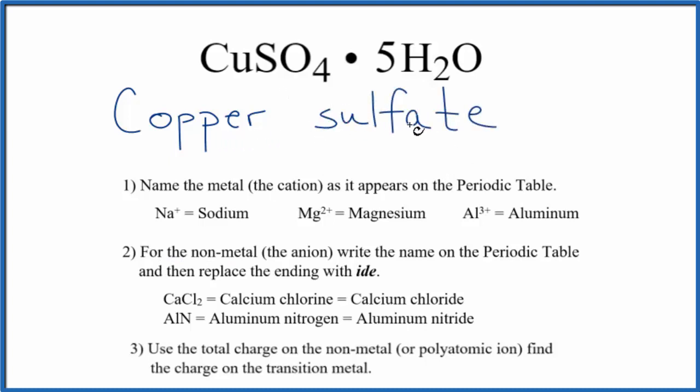So we have copper sulfate so far, but copper is a transition metal. So we have to figure out the charge on the copper based on what it's bonded to here. We're going to find the charge on our transition metal based on the total charge of what it's bonded to.